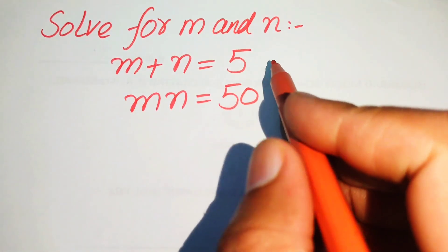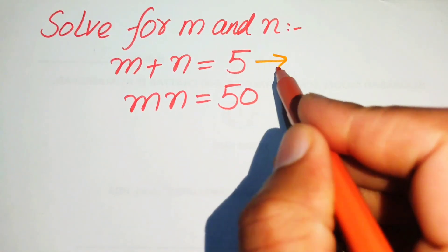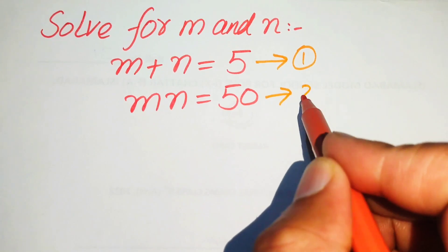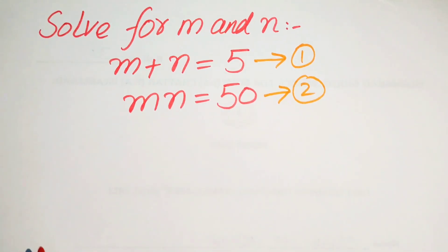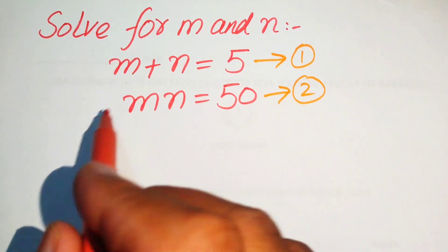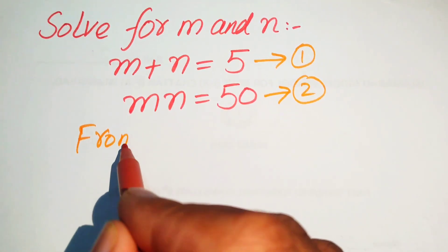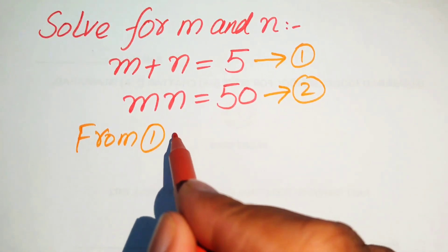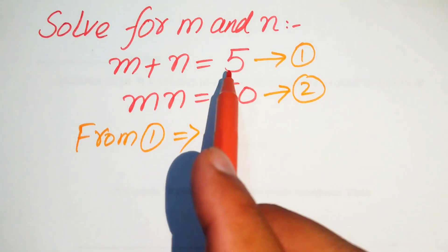The first step is to label our equations: we take m plus n equals 5 as equation number 1, and m times n equals 50 as equation number 2. Now we focus on equation number 1, moving m to the right hand side.